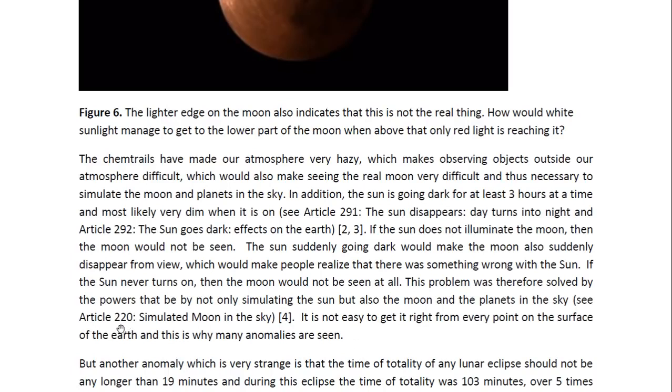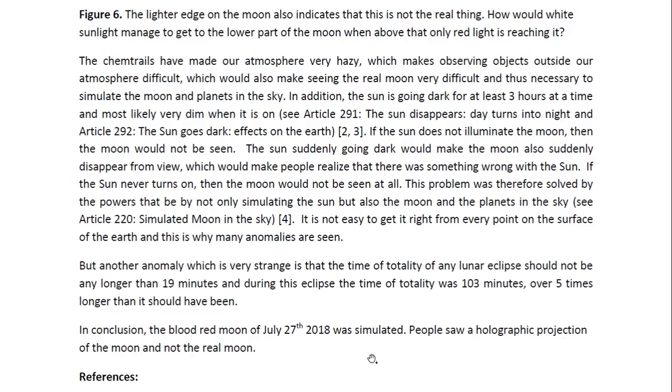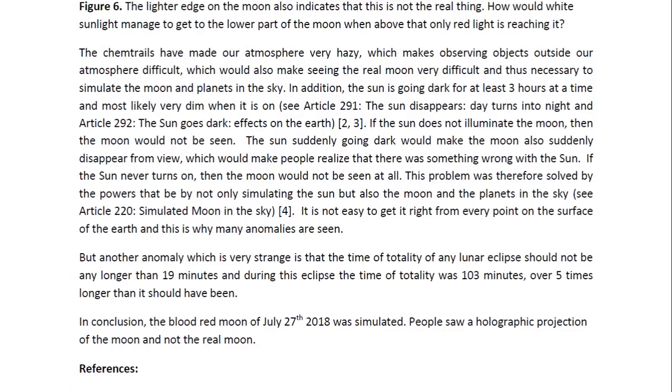And you may look at Article 220 entitled Simulated Moon in the Sky for more details. It is not easy to get it right from every point on the surface of the Earth, and this is why many anomalies are seen. But another anomaly, which is very strange in this particular eclipse, is that the time of totality of any lunar eclipse should not be any longer than 19 minutes. And during this eclipse, the time of totality was 103 minutes, over five times longer than it should have been.